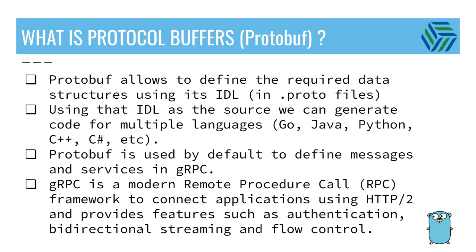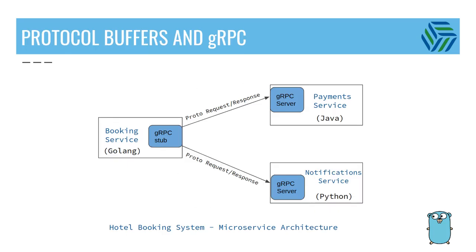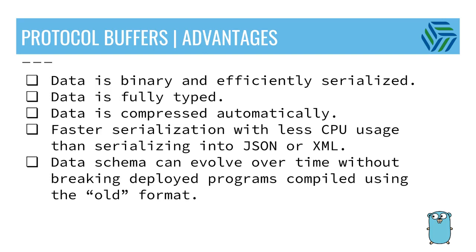Protobuf is used by default to define messages and services in gRPC. In a nutshell, gRPC is a modern remote procedure call framework to connect applications using the HTTP/2 protocol and provides features such as authentication, bi-directional streaming, and flow control. In this example we have a microservice architecture for a hotel booking system where the booking service written in Golang uses a gRPC stub as the client of two gRPC servers — payments and notifications. Both the request and response data structures along with the client and server code are generated using protocol buffers. The payments service is written in Java and the notifications service is written in Python, demonstrating that gRPC and protobuf support a polyglot microservices architecture.